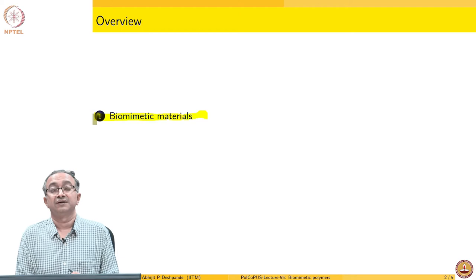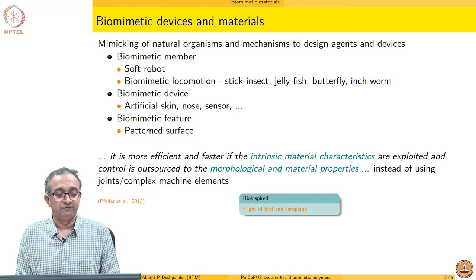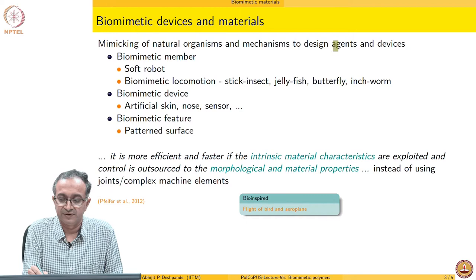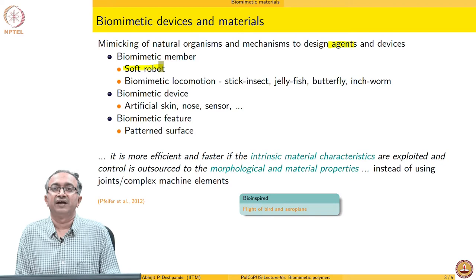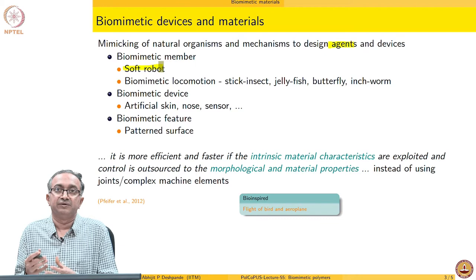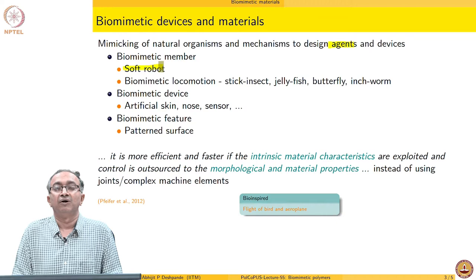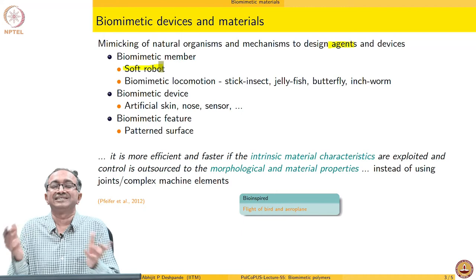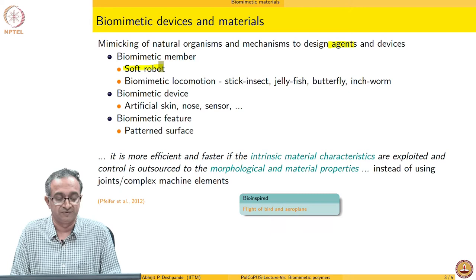The emphasis here is on biomimetic materials as opposed to biomimetic devices. When we say it is a biomimetic device, it could be, for example, an agent itself. For example, a soft robot is an agent which we can say is mimicking a load-carrying animal or mimicking an insect. The overall robot itself mimics a certain agent and has a certain agency — it performs some function.